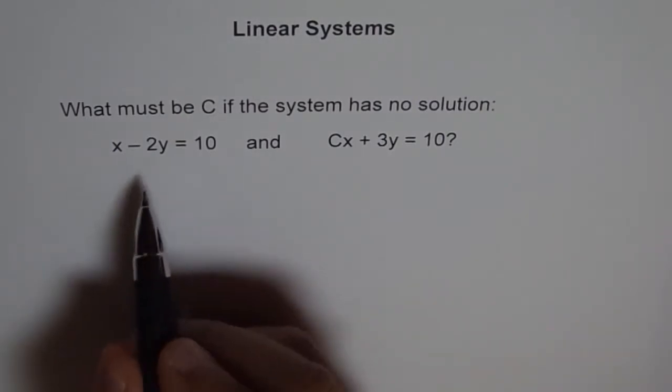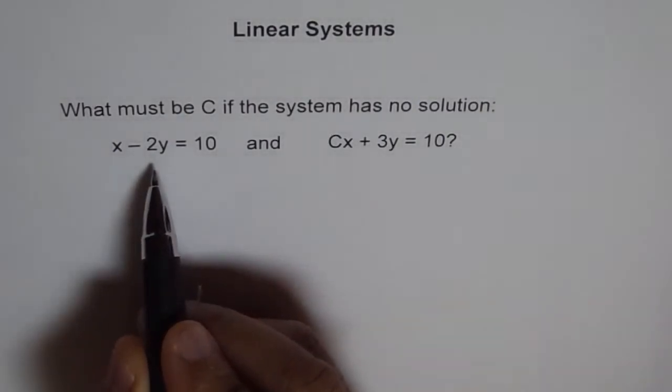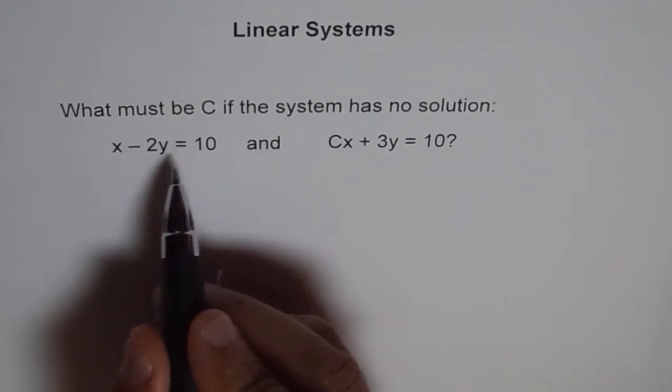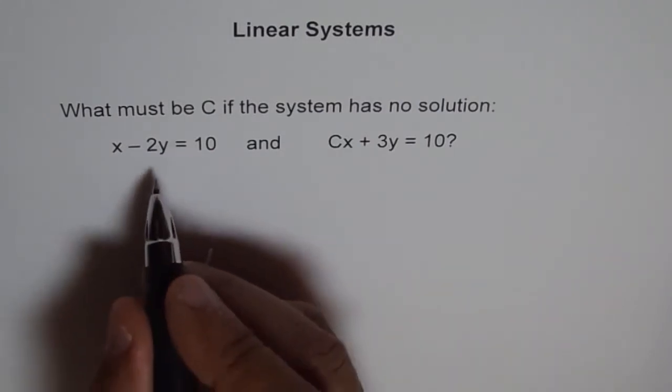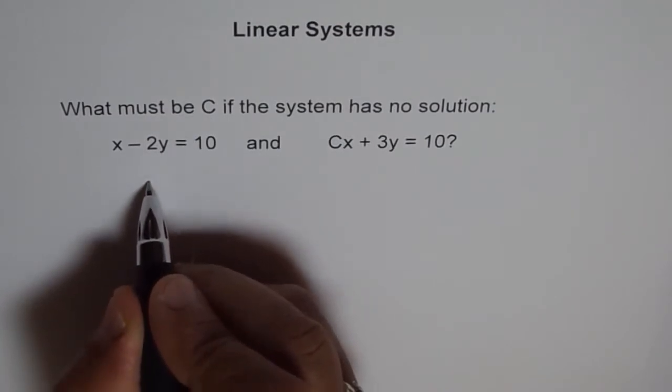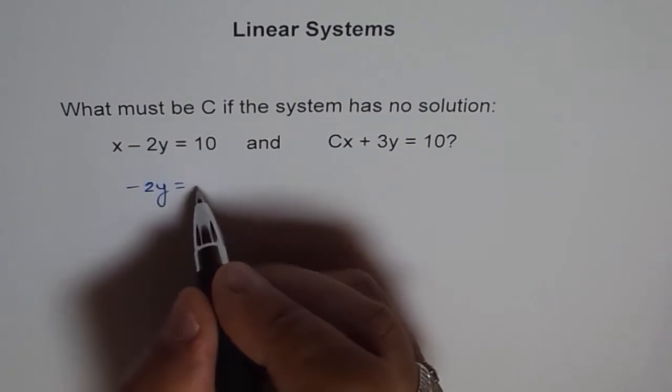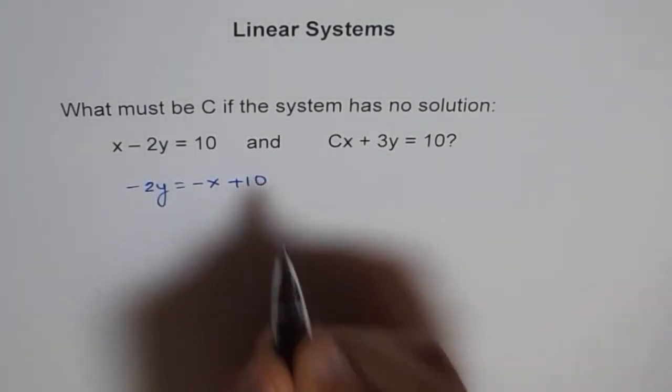So let's try to do that. So here, if I write in slope-intercept form, then I will take x on this side and I have to basically isolate y. So let's try to isolate y here. So we get minus 2y equals minus x plus 10, right?